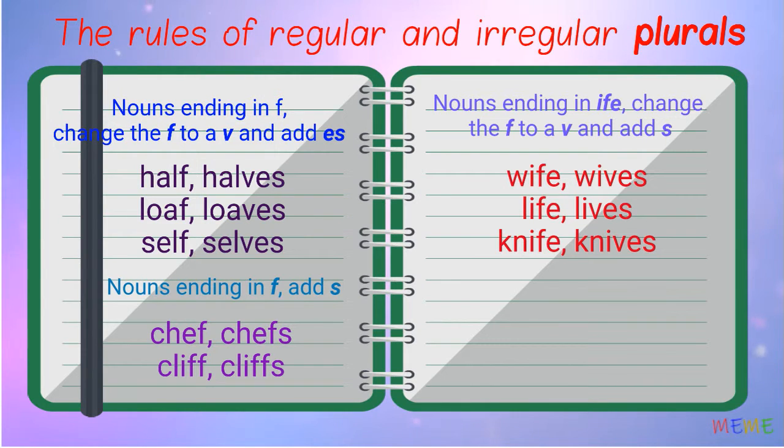For common nouns that end with a consonant plus -y, change the -y to an -i and then add -es. There are different types of nouns.